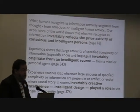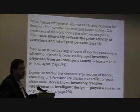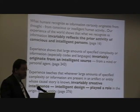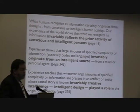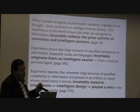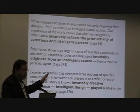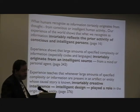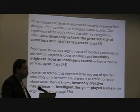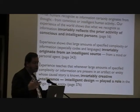Here's what he says. First quote: what he recognizes as information invariably reflects the prior activity of conscious and intelligent persons. Next: when he talks about specified complexity or information, it invariably originated from intelligent sources. And a little farther on, he says creative intelligence — intelligent design — played a role in the origin of entities. You notice there's kind of a theme here. This is another reason it's 500 pages long: he repeats himself over and over again using the same terminology.